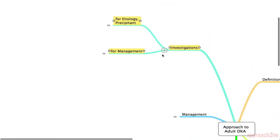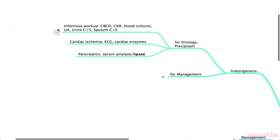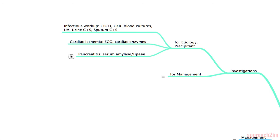For investigations, first consider the etiology or precipitant. For infection, you need a CBC and differential, chest x-ray, blood cultures, urinalysis, and urine and sputum cultures. Basically, anything you can test to find infection, you should do. For cardiac ischemia — MI being a common cause of DKA — you need an ECG and cardiac enzymes. Pancreatitis is also a common cause, so test for serum amylase or lipase.